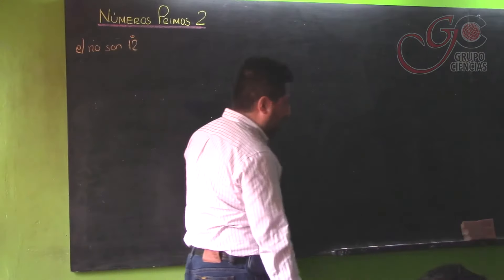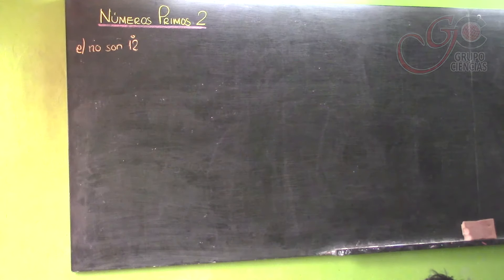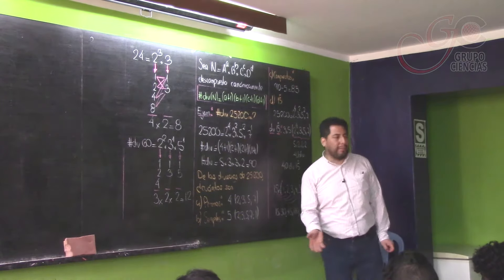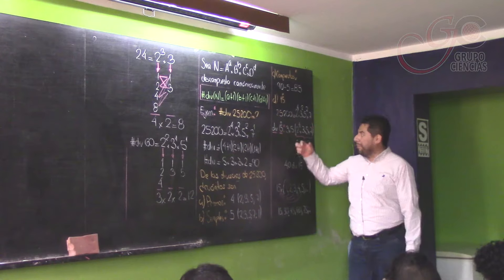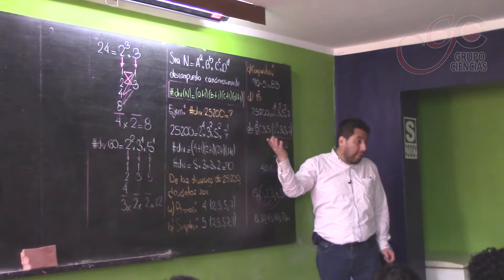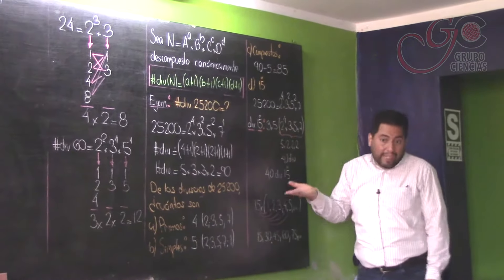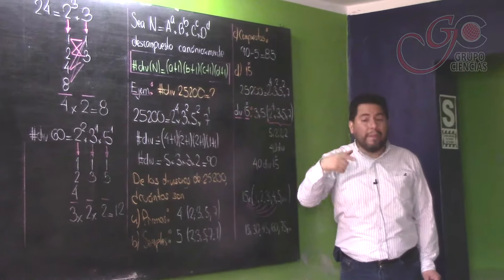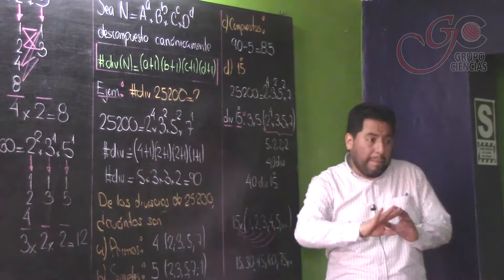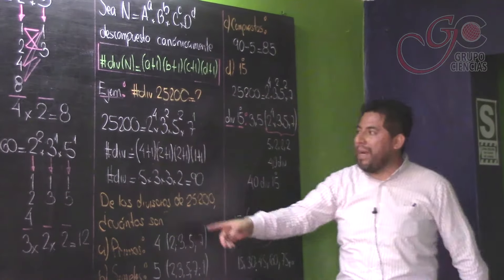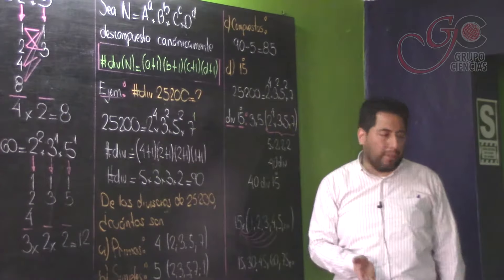Los divisores múltiplos de 15 se obtienen sacando previamente un factor 15. Si me piden múltiplos de 10, sacamos un factor 10; si me piden múltiplos de 8, sacamos un 8; pero una sola vez, no varias veces. Si me piden múltiplo de 2, con un 2 es más que suficiente porque uno solo hará que sea múltiplo de 2.